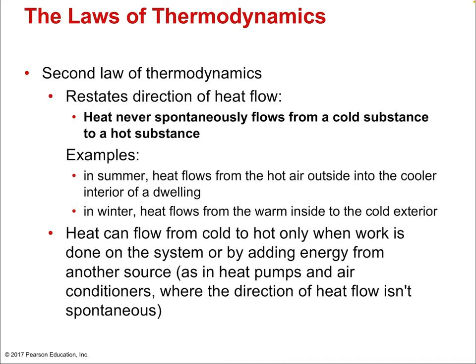The second law of thermodynamics restates something said before: heat always flows from hot to cold. Heat never spontaneously flows from a cold substance to a hot substance. In summer, heat flows from hot air outside into the cooler interior of a dwelling; in winter, heat flows from the warm inside to the cold exterior. Heat can flow from cold to hot only when work is done — like an air conditioner forcing a house to remain cooler than the hot outside surroundings, but that takes work.